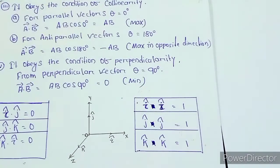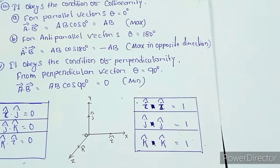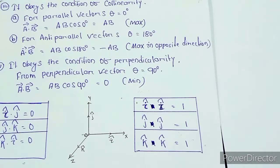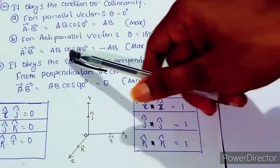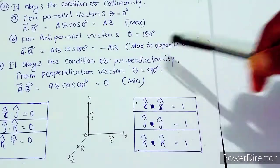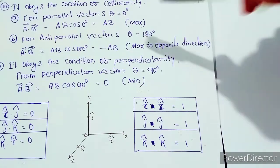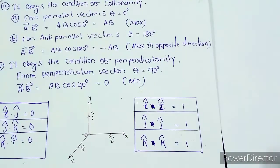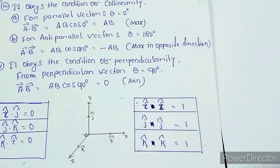For anti-parallel vectors, the vectors are in opposite directions. In that case, cosθ equals minus 1, so the dot product equals minus AB, which is the minimum value.